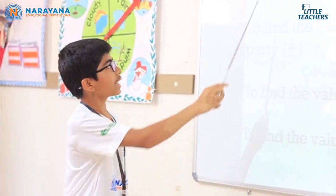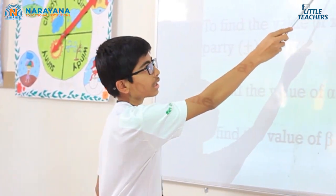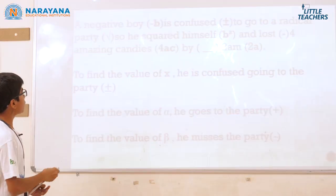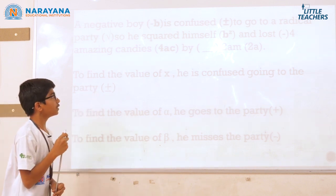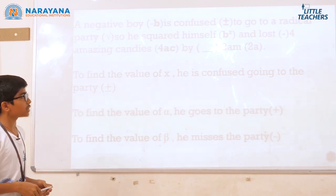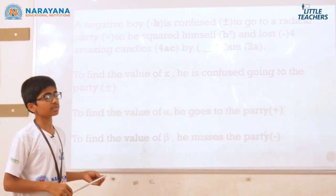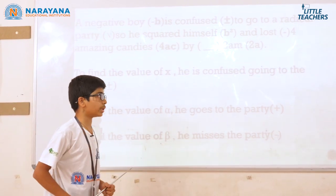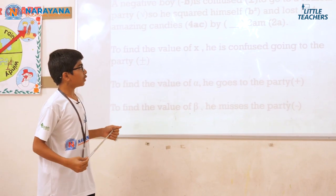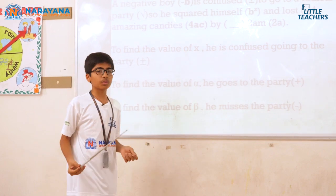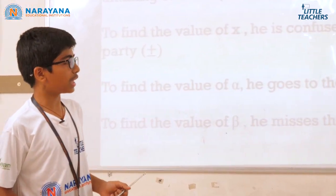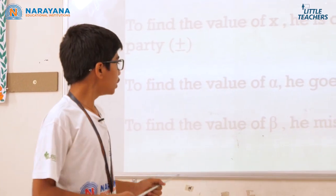A negative boy (−b) is confused (±) to go to a radical party with a square root, so he squares himself up (b²) and loses 4 amazing candies (−4ac) over 2 a.m. (2a). To find the value of x, he is confused going to the party. To find alpha, he goes to the party (plus). To find beta, he misses the party (minus).